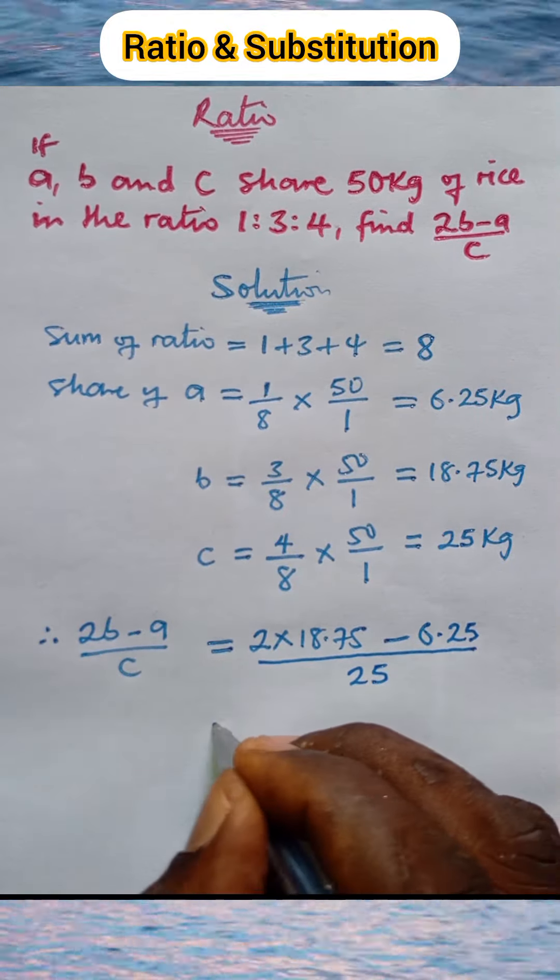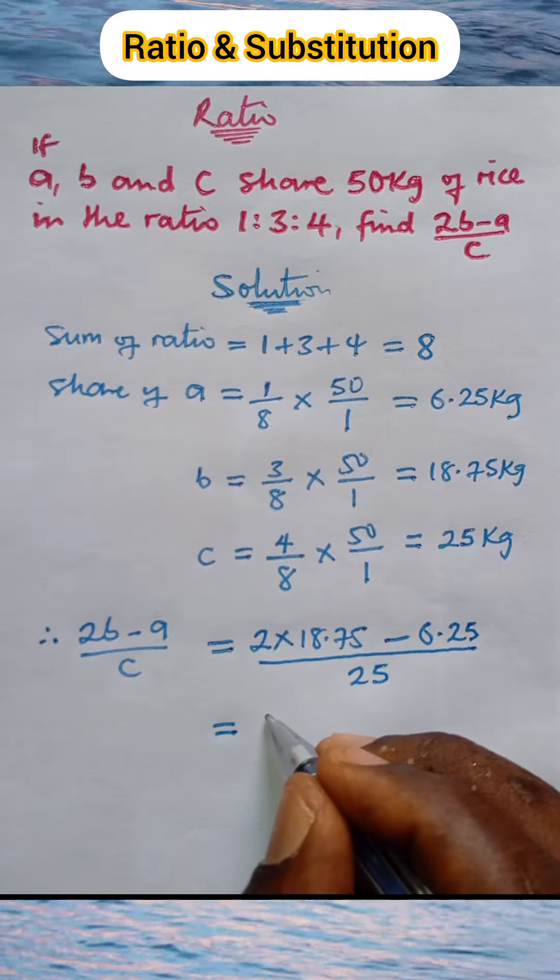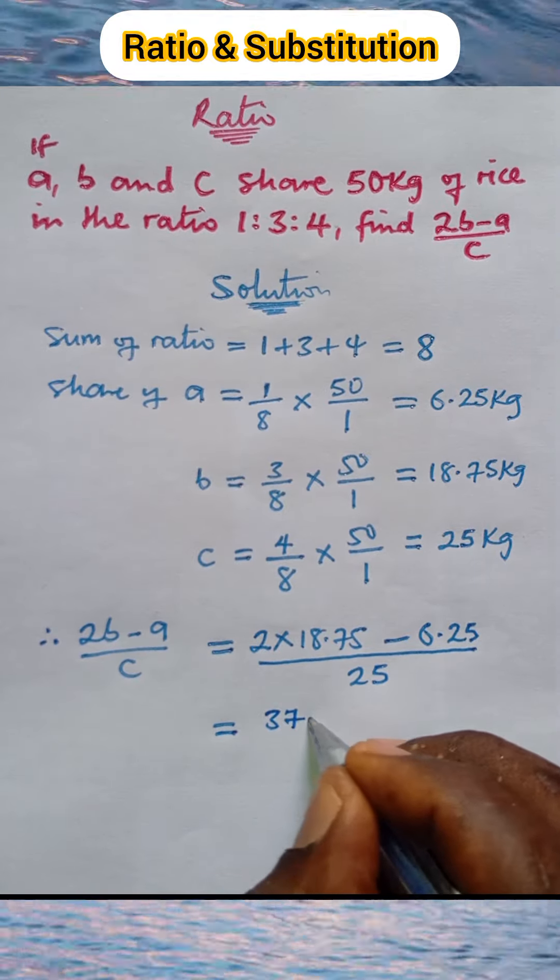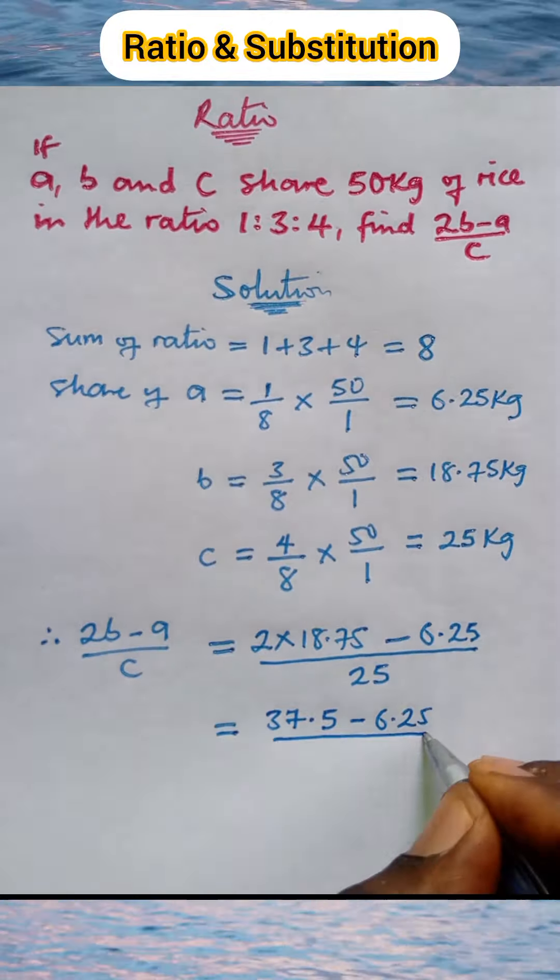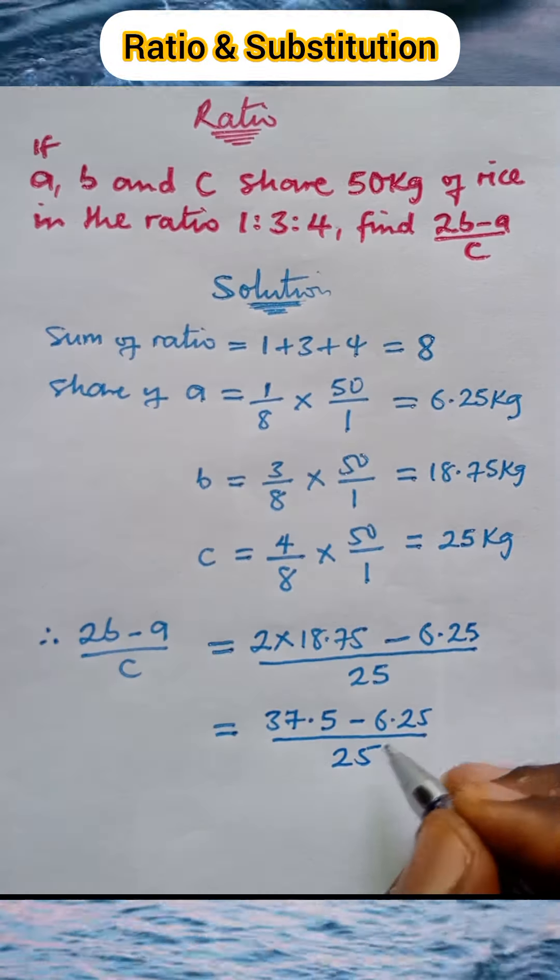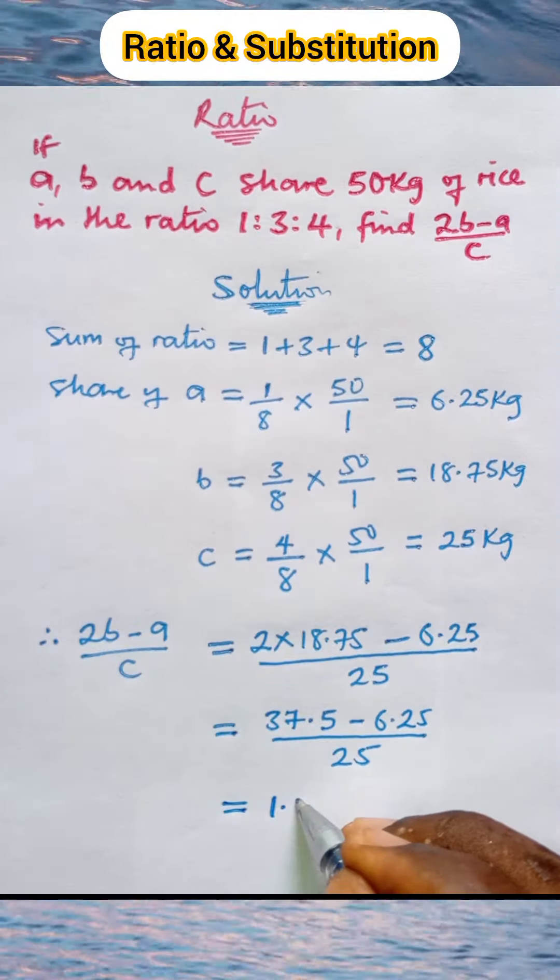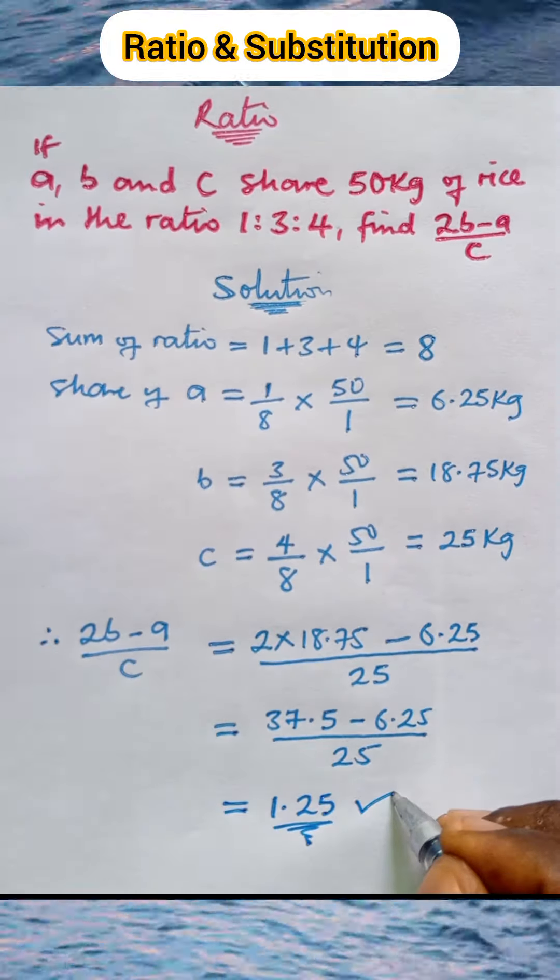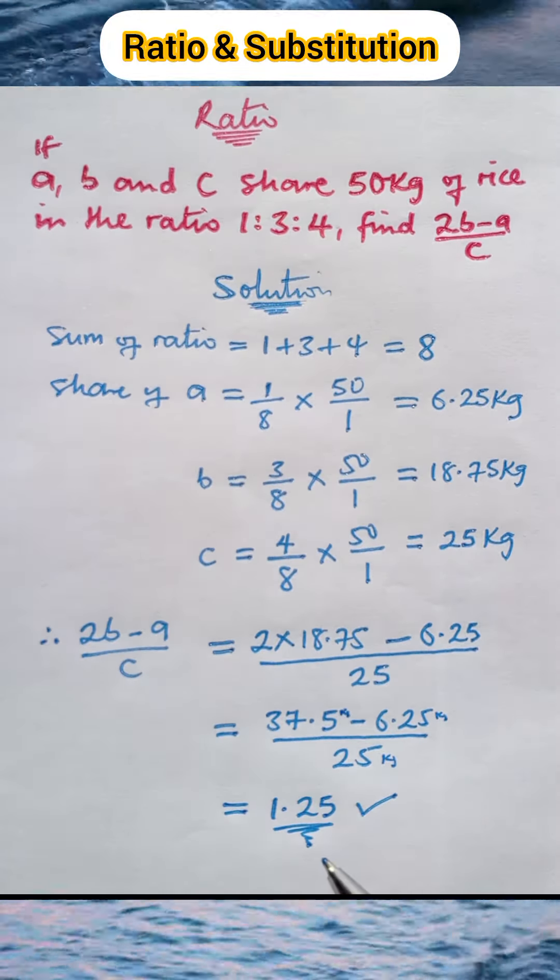Multiplying, we get 37.5 minus 6.25, all over 25. This gives us 1.25, and this is the final answer. Thank you very much for watching.